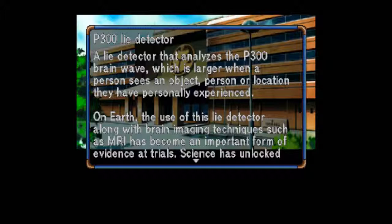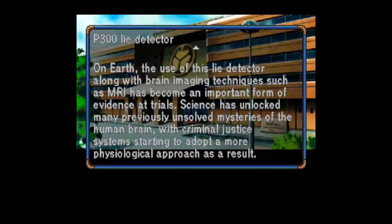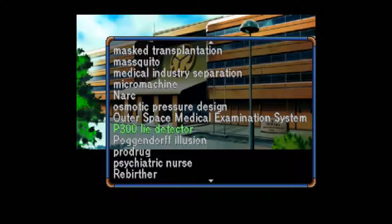P-300 Lie Detector: A lie detector that analyzes the P-300 brainwave, which is larger when a person sees an object, person, or location they have personally experienced. On Earth, the use of this lie detector, along with brain imaging techniques such as MRI, has become an important form of evidence at trials. Science has unlocked many previously unsolved mysteries of the human brain, with criminal justice systems starting to adopt a more psychological approach as a result. Though maybe they thought so back in '94, it's not admissible in trials now.